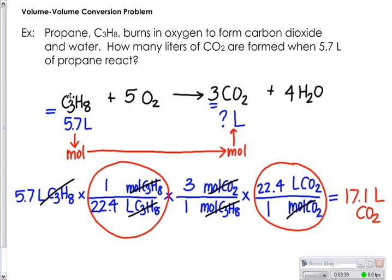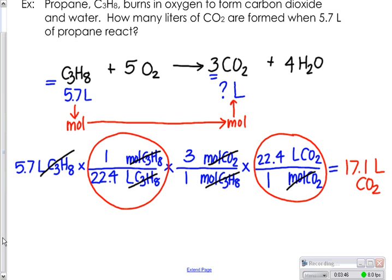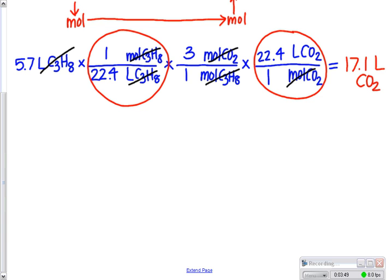So another way of looking at this problem would be to just start with what you were given: 5.7 liters of C3H8. And because it is a volume-volume problem, you can convert from C3H8 to CO2 directly.